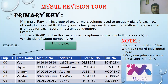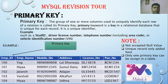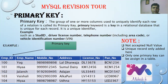Primary key: the group of one or more columns used to uniquely identify each row of a relation is called the primary key. It is a unique identifier — for example, Employee ID, Student ID, Driver's License Number, Telephone Number, Vehicle Identification Number. Remember: null values are not accepted in a primary key, all records must be unique, and only one primary key can be assigned to a table.